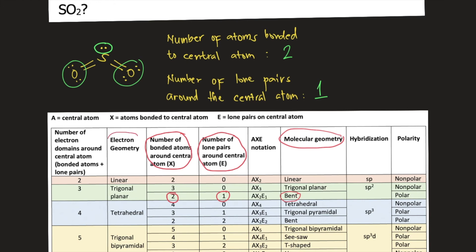And the electron geometry, which is trigonal planar. So the answers to this question are: the electron geometry is trigonal planar and the molecular geometry is bent.